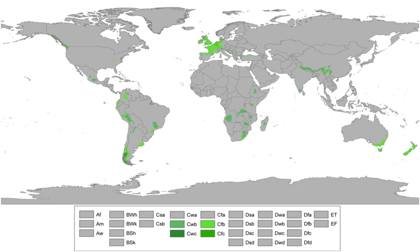CFB climates are predominant in central parts of Western Europe, including northern Spain, Belgium, Britain, France, Ireland and the Netherlands. They are the main climate type in New Zealand and the Australian states of Tasmania, Victoria and southeastern New South Wales. In North America, they are found mainly in Washington state, Oregon, Vancouver Island and neighboring parts of British Columbia, as well as many coastal areas of southwest Alaska.